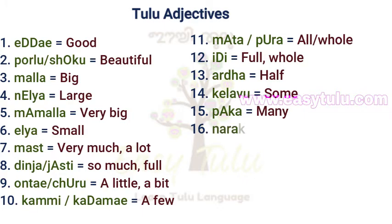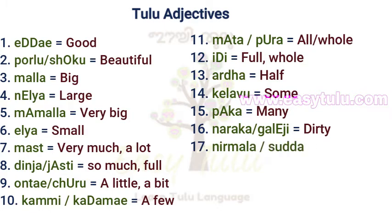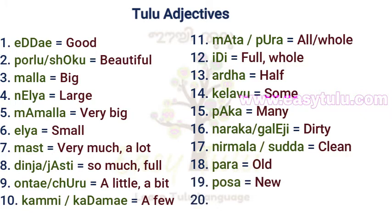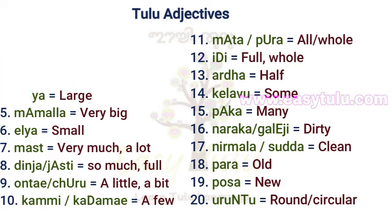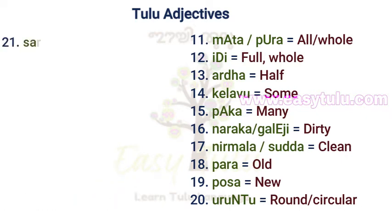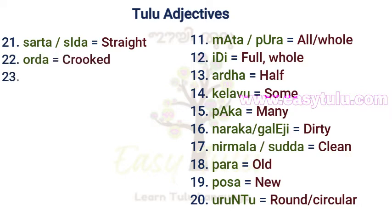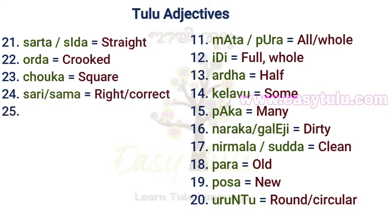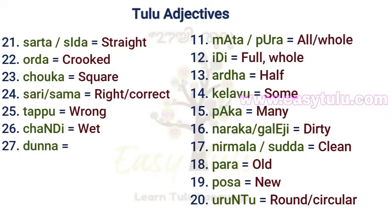Paka — Many. Naraka — Or Galeji — Dirty. Nirmala or Sutta — Clean. Para — Old. Pasa — New. Uruntu — Round or Circular. Sarta or Sida — Straight. Wurtha — Crooked. Chauka — Square. Sari or Sama — Right or Correct. Tappu — Wrong. Chandi — Wet. Dunna — Heavy.